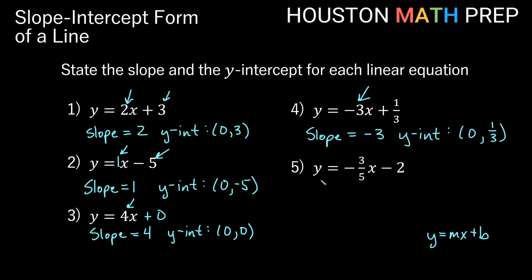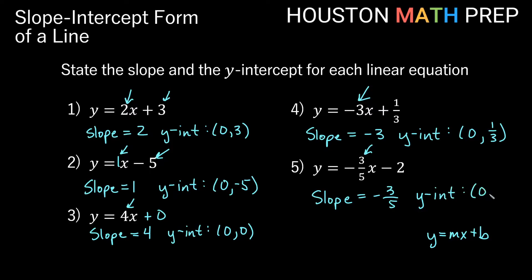Let's look at our last one on this page: y equals negative 3 fifths x minus 2. Our m is negative 3 fifths, so our slope is negative 3 fifths. We have minus 2, so we go through the y-axis at negative 2, meaning our y-intercept is the point (0, -2).